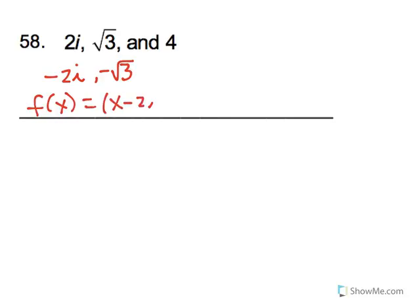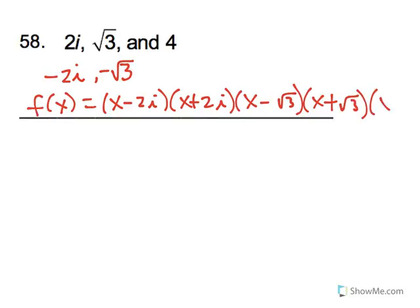So we have x minus 2i times x plus 2i, x minus radical 3, x plus radical 3, and x minus 4 is the last factor.